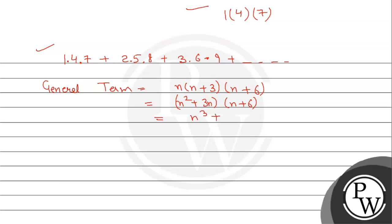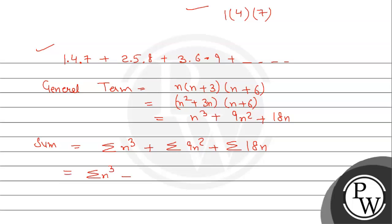Expanding: n(n+3)(n+6) = (n²+3n)(n+6) = n³ + 9n² + 18n. So the sum up to n terms is: Σn³ + Σ9n² + Σ18n, which equals Σn³ + 9·Σn² + 18·Σn.